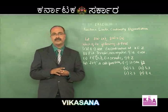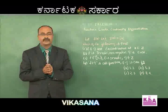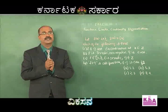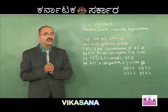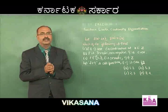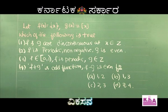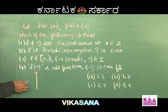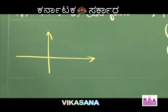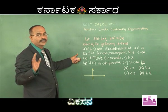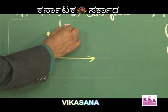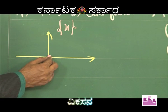f(x) is the fractional part of x and g(x) is the integral part of x. Let me explain both functions using their graphs. The graph of the fractional part of x is a simple repeated saw-tooth pattern.